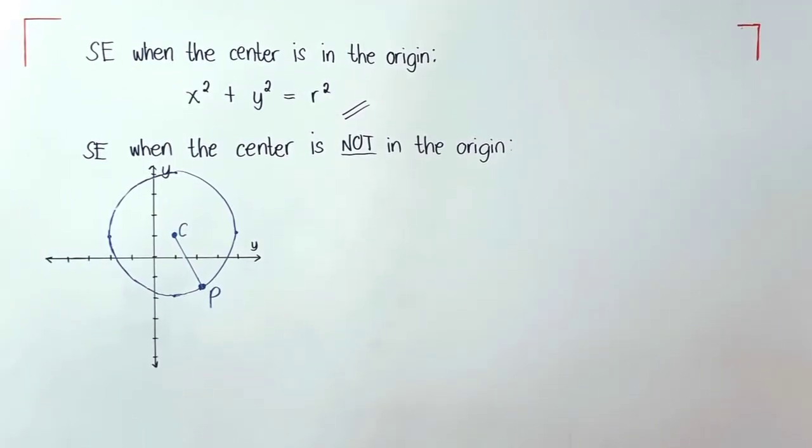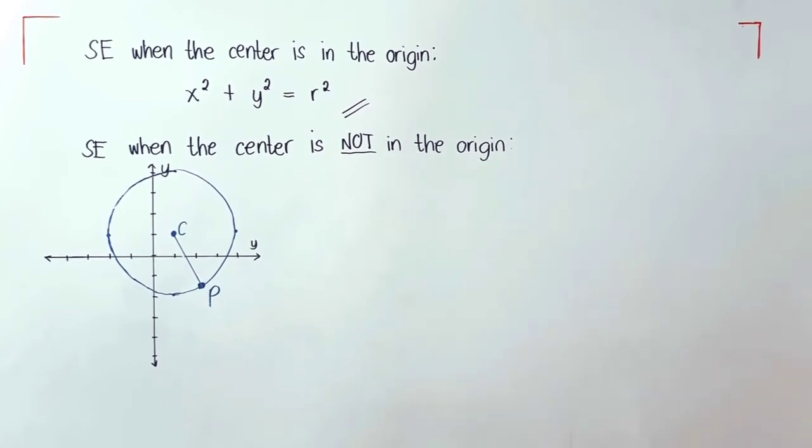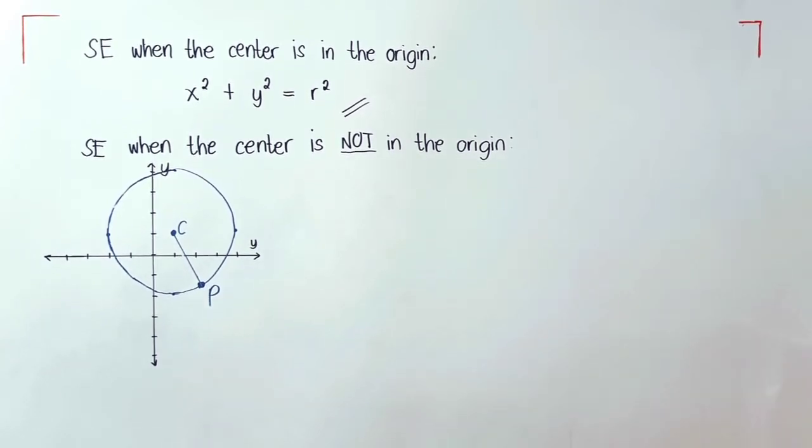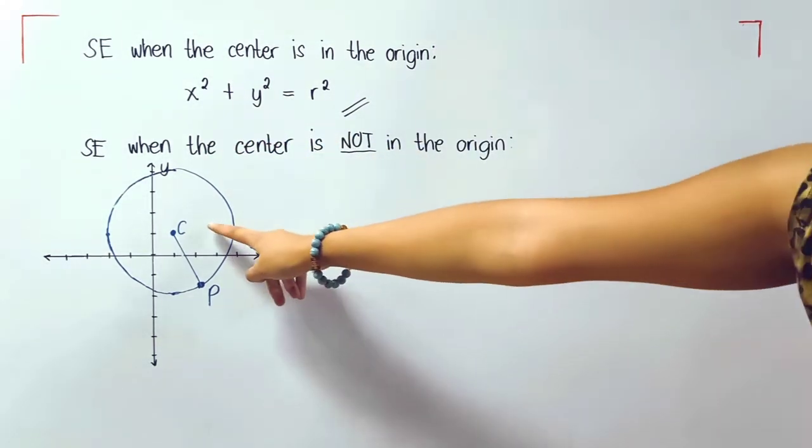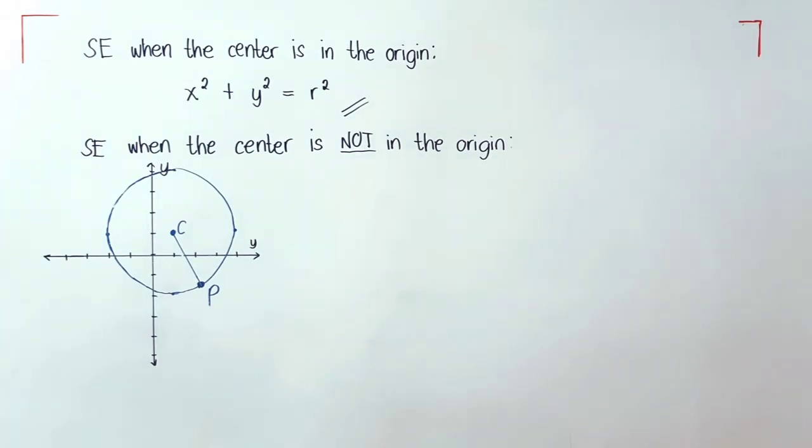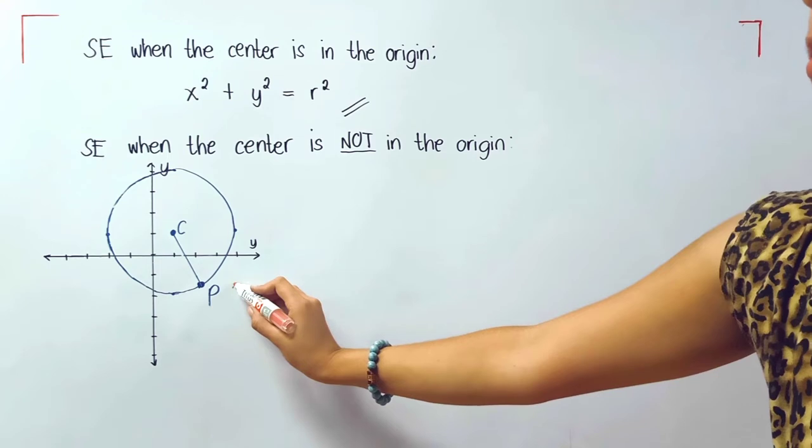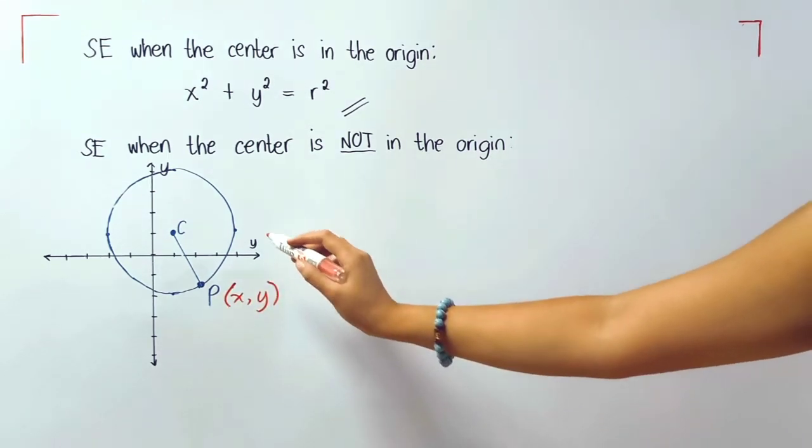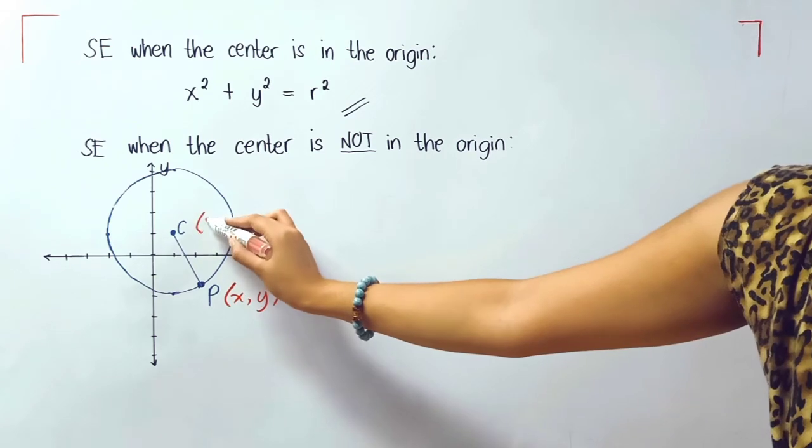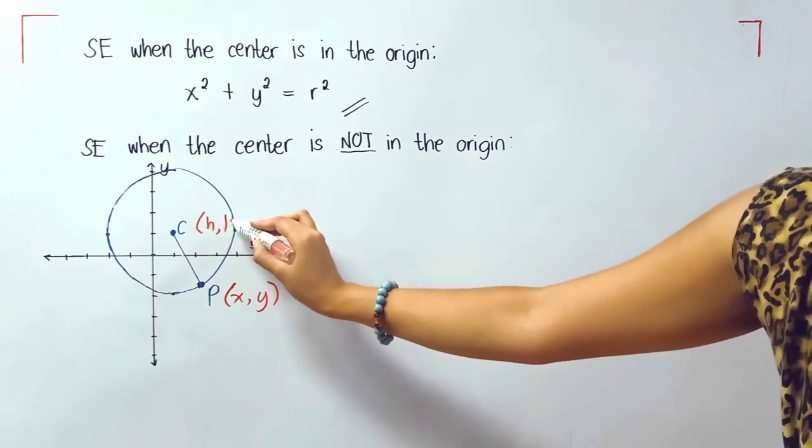Again, the standard equation when the center is in the origin is x squared plus y squared equals r squared. Now what is the standard equation when the center is not in the origin? Just like our illustration here, the center is not in the origin. P is any point x, y and the center here is any point like h, k.